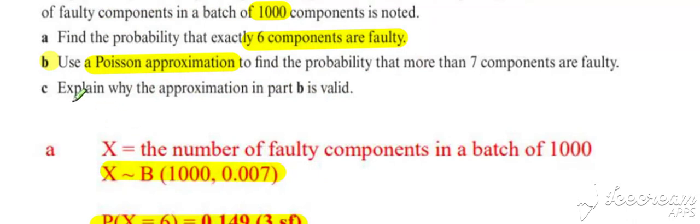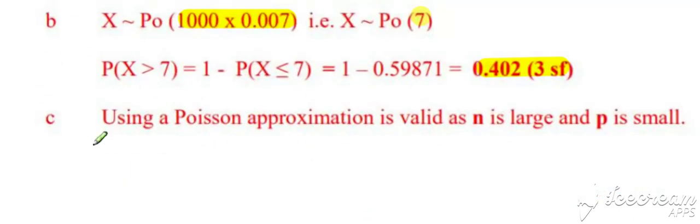So we've got to justify or explain why the approximation is valid. So for validity, we need to consider whether n is large enough and p is small enough.